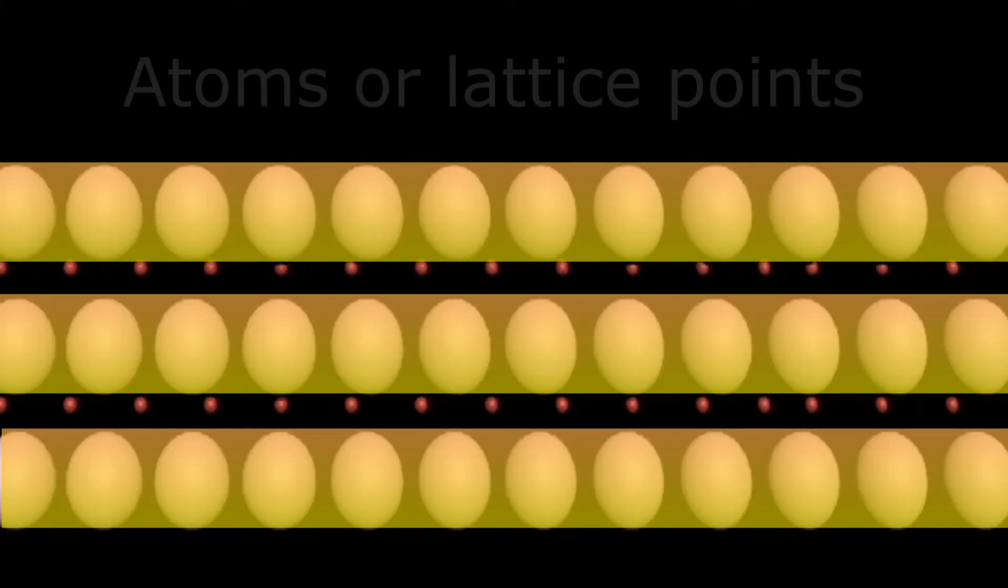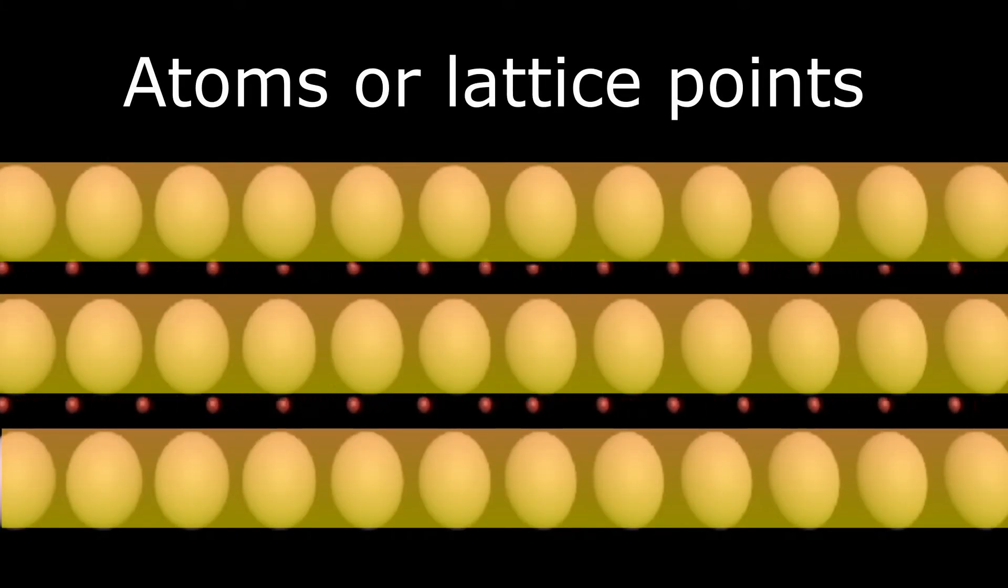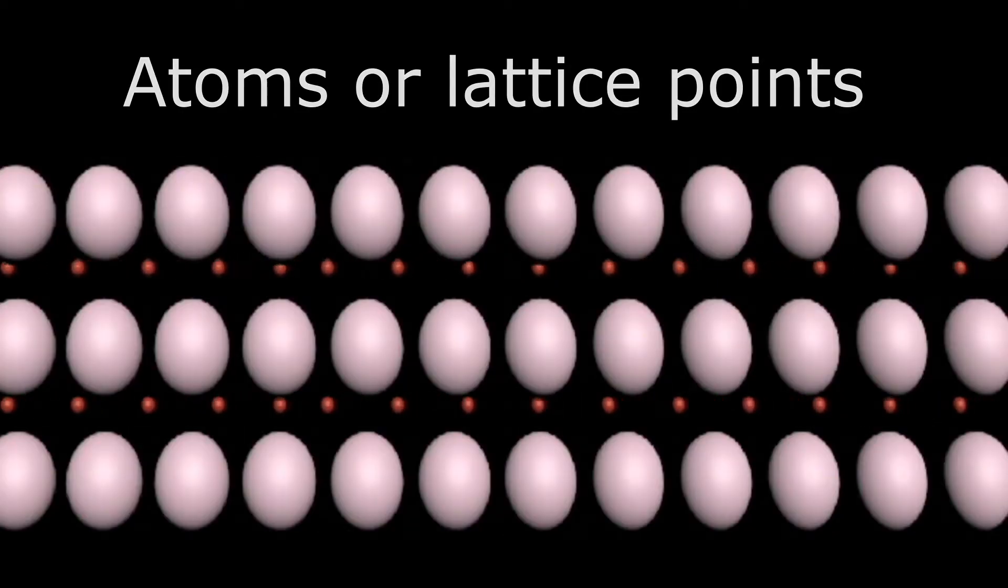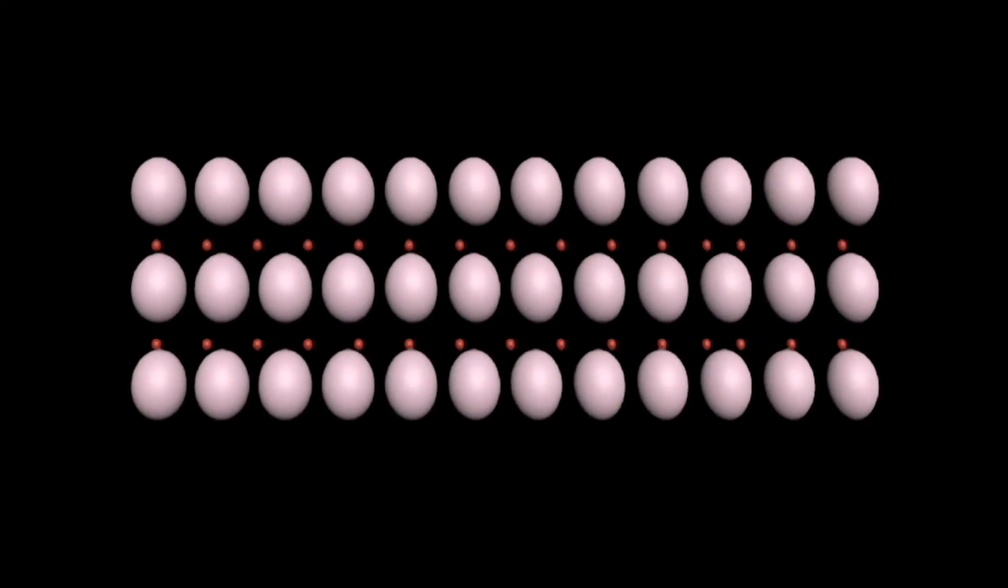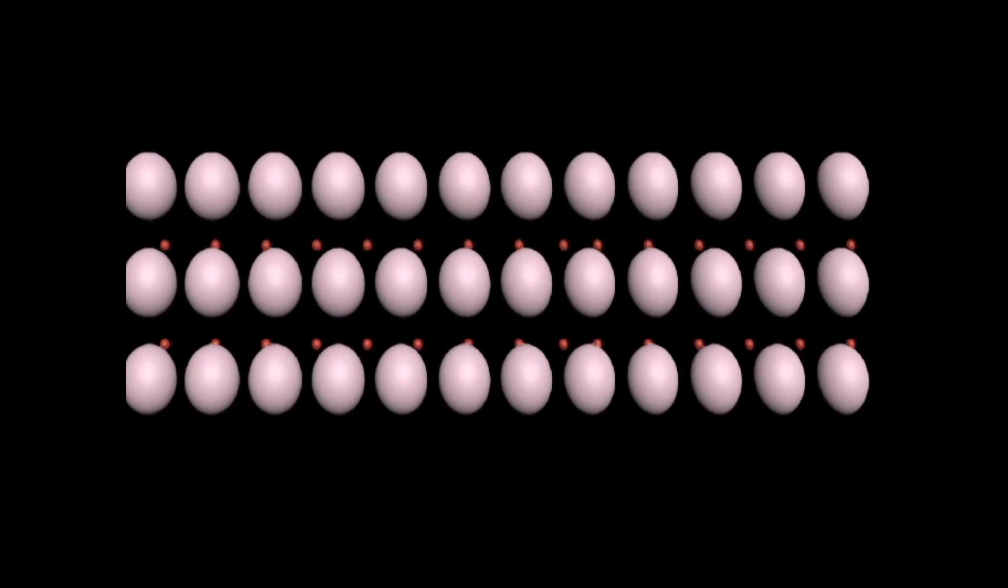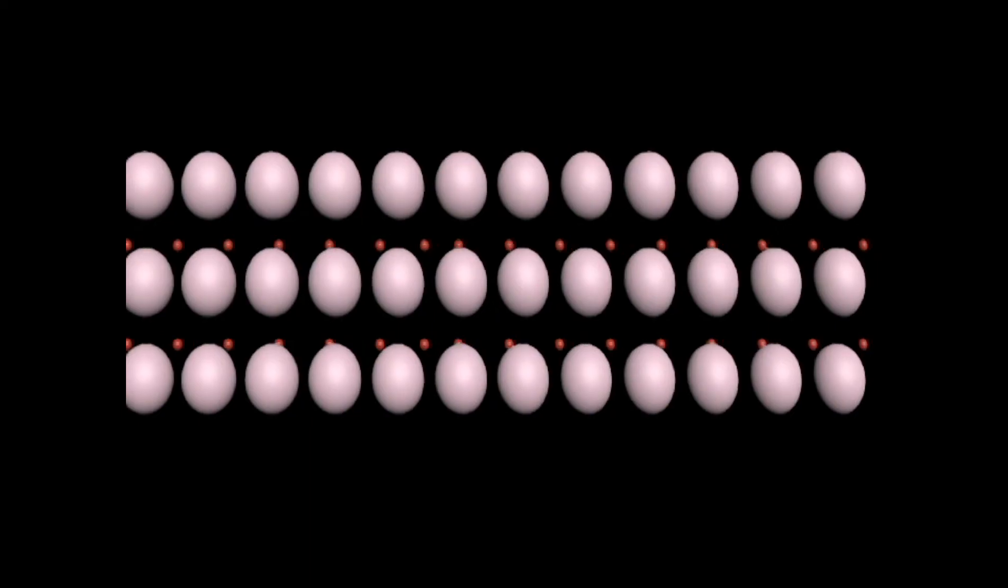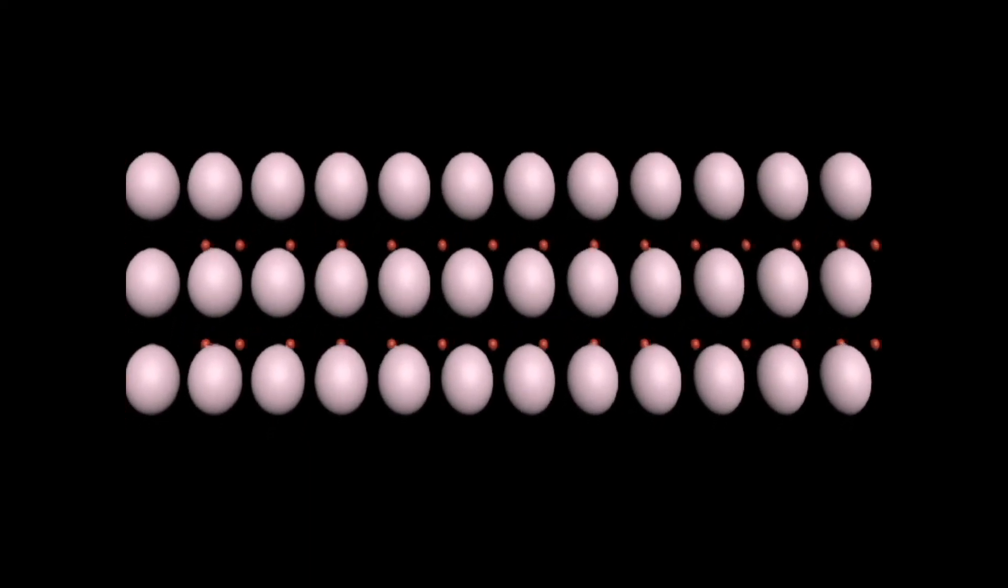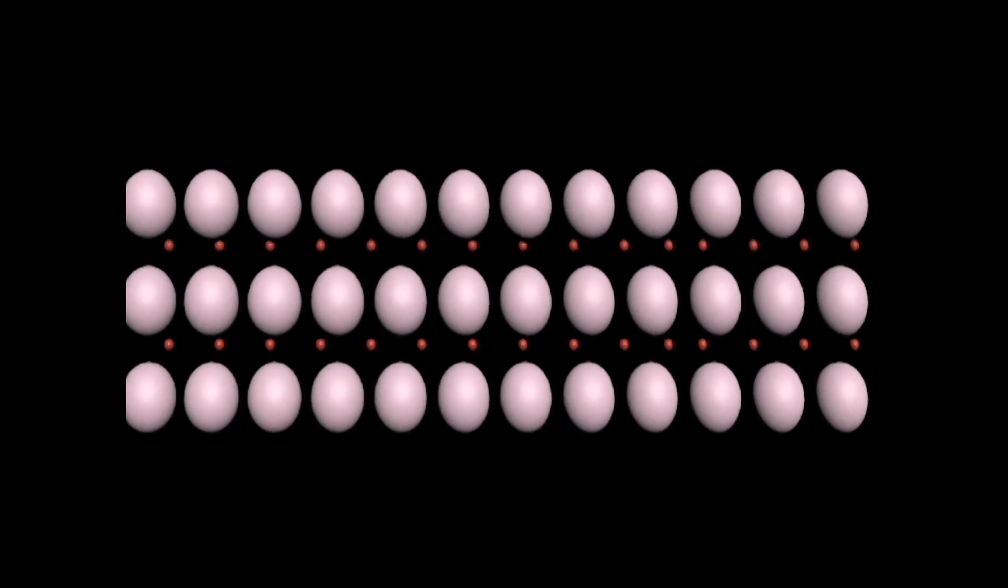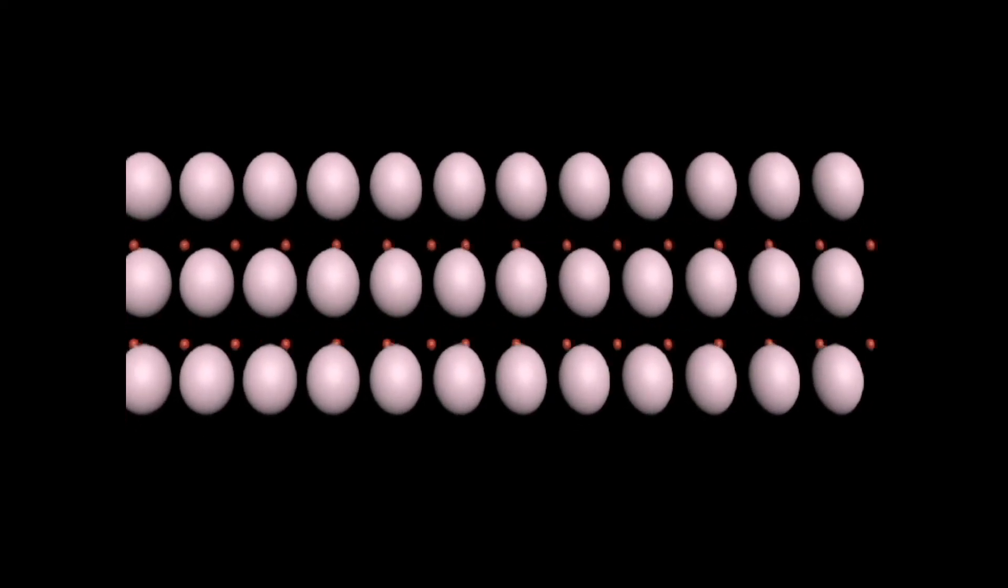But when we increase the temperature of the conductor, these atoms start vibrating. This vibration of atoms provides hurdles and resistance to the flow of electrons or holes. With the increase of temperature, the lattice or atomic vibration increases.